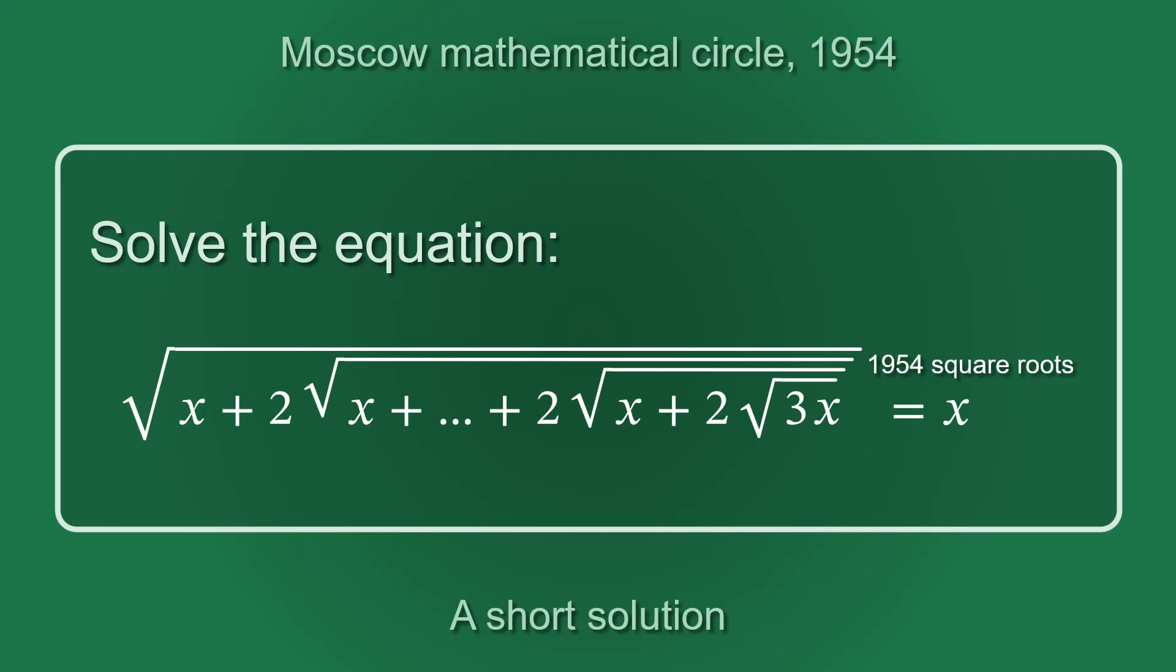Of course, all square roots here are so-called arithmetic square roots, defined for a non-negative real number, and the value of an arithmetic square root is also a non-negative real number. There is a minor technical issue here. The second square root is meant to be in line with others. This is not the power of 2 as someone may assume, but 2 times the square root.